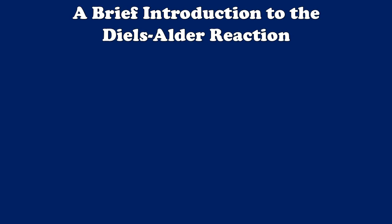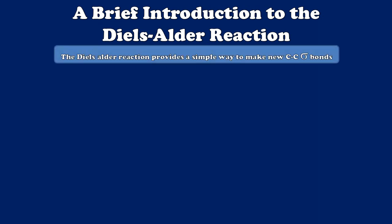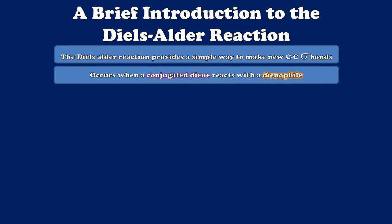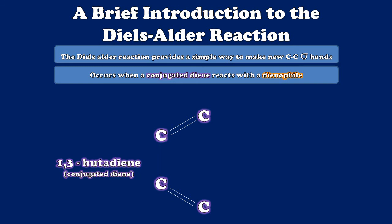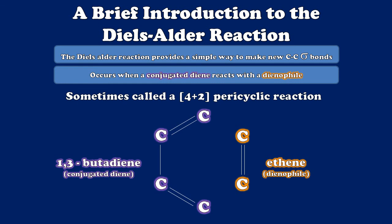Now let's move on to part two of our fundamentals lecture: the Diels-Alder reaction. The Diels-Alder reaction is a famous reaction that provides a simple way to make new carbon-carbon sigma bonds. It takes place when a conjugated diene — meaning a diene in which the double bonds are alternating — reacts with a dienophile, which is essentially anything with a pi bond that's willing to react with that diene. Let's take the example of the simplest possible diene, 1,3-butadiene, reacting with the simplest possible dienophile, ethene. The Diels-Alder reaction is sometimes called a 4+2 pericyclic reaction because 4 pi electrons from the diene react with 2 pi electrons from the dienophile — a total of 6 pi electrons. The term pericyclic refers to the fact that the entire reaction takes place in a single concerted step.